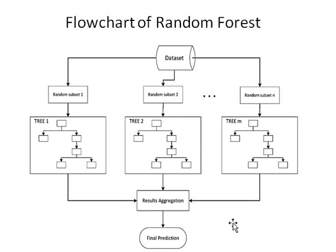When we apply a single Decision Tree, there is high variance between the original target variable and our predicted target variable. But when we apply multiple Decision Trees, there is low variance between our actual target variable and our model's predicted target variable. That's why we use Random Forest for a better model and better learning and understanding of our model — we obtain a model with low bias and low variance.